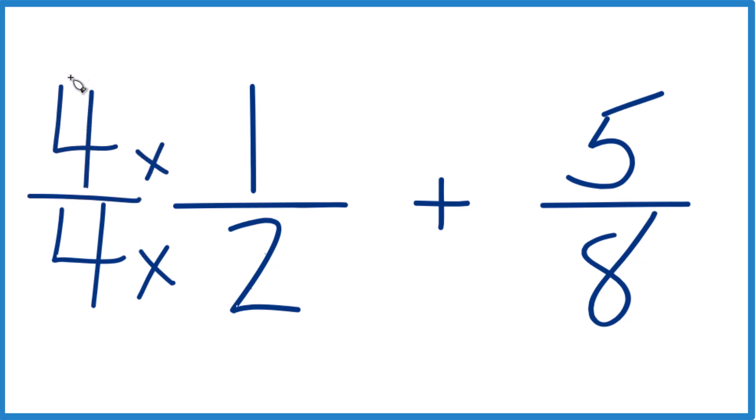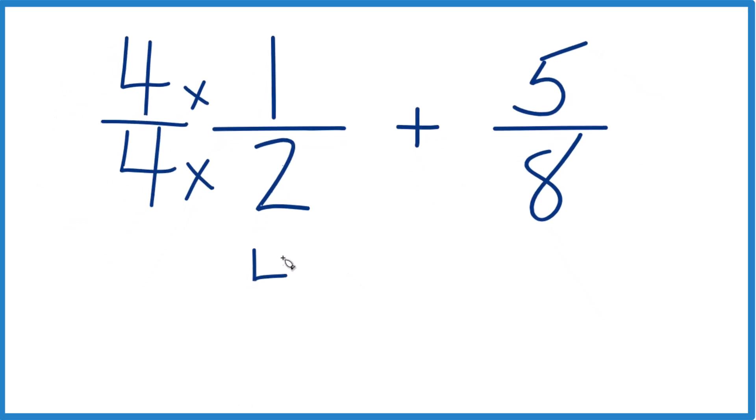That's because four divided by four is one, so we're just multiplying by one. We don't change anything, just the way it's represented. Now four times one is four, and four times two is eight.